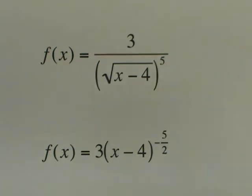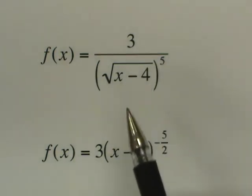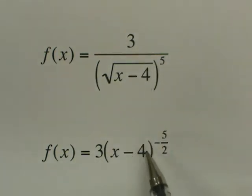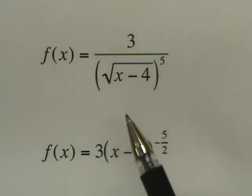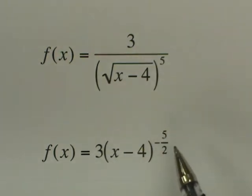And so we're going to write it as f of x equals 3, x minus 4. Because I'm moving this term up it's going to be negative, the power is 5, a square root is an index, and those are always written with fractions, so this is negative 5 halves. Negative 5 halves represents the square root raised to the 5th on the bottom.